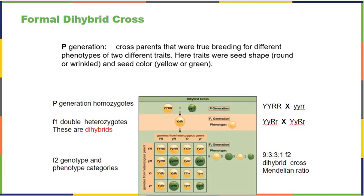Everything we've done thus far has only been tracking one trait. You can, of course, track more than one trait. If you track two traits, that's a dihybrid cross — mono means one, di means two. In a dihybrid cross, we're looking at parents who have two phenotypes that differ, and we're going to track two traits at the exact same time. We have to consider all of the potential gametic pairings to make our Punnett square.